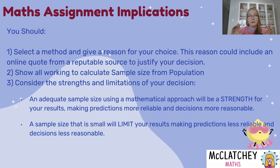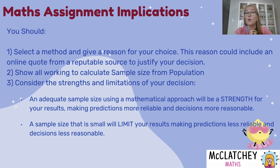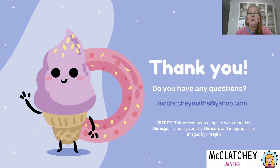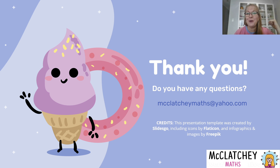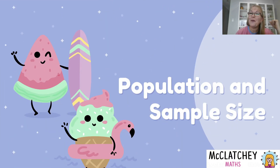A big enough sample is a strength; too small a sample is a limitation — just be careful not to say it's both. One good strategy is to make an assumption early in your assignment that your sample will be representative, then evaluate that assumption later. For example, a sample of 20 from a population of 2,000 is probably a limitation. That's all for today — I hope you found this helpful. If you have questions, contact me at mcclutchymaths@yahoo.com. Have a wonderful day!